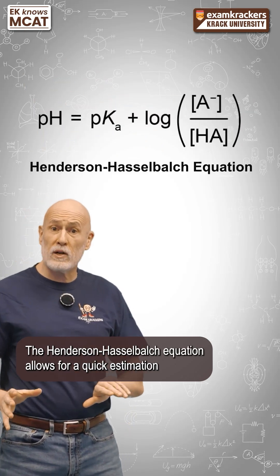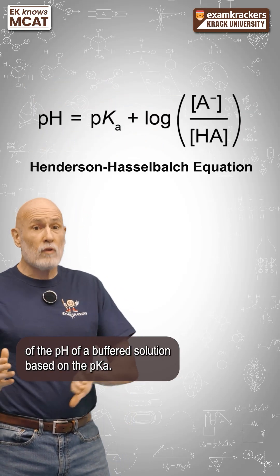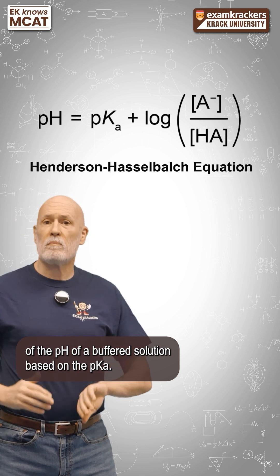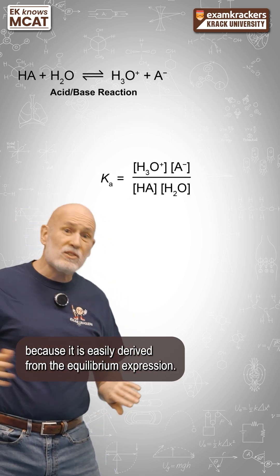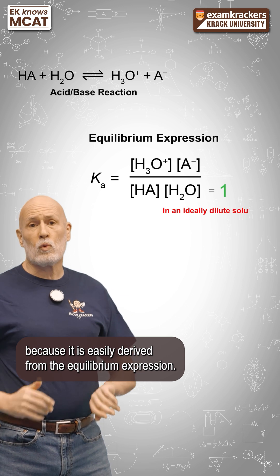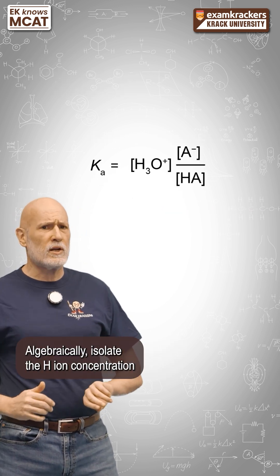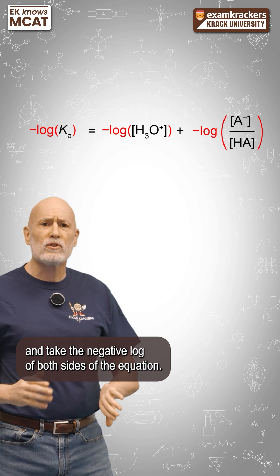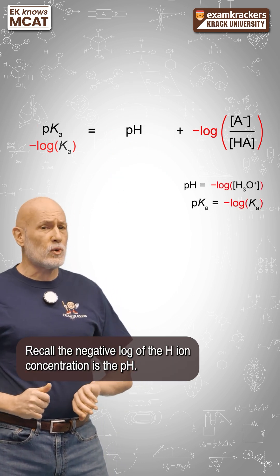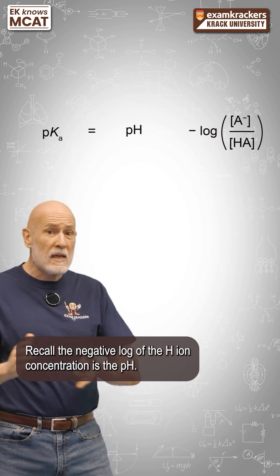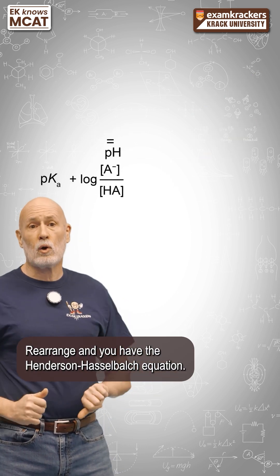The Henderson-Hasselbalch equation allows for a quick estimation of the pH of a buffered solution based on the pKa. Don't bother to memorize the equation, because it is easily derived from the equilibrium expression. Algebraically isolate the H-ion concentration and take the negative log of both sides of the equation. Recall the negative log of the H-ion concentration is the pH. Rearrange, and you have the Henderson-Hasselbalch equation.